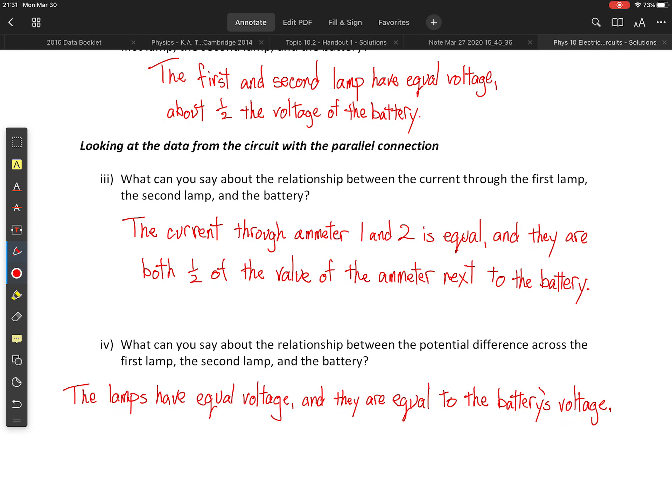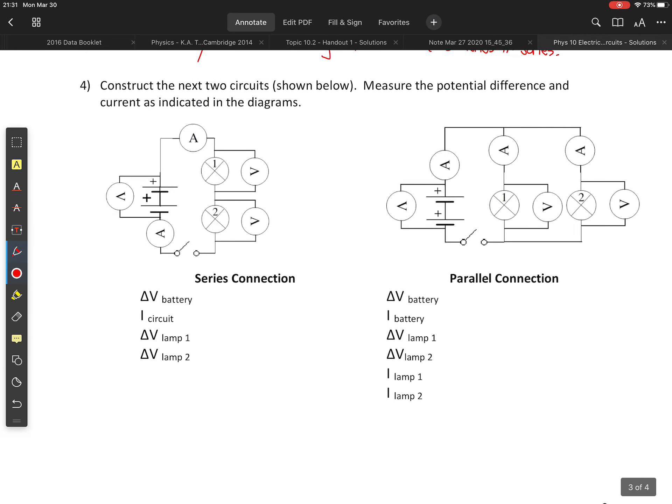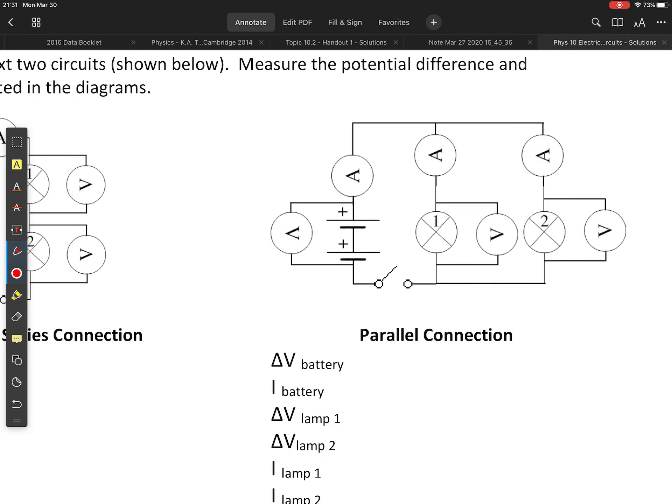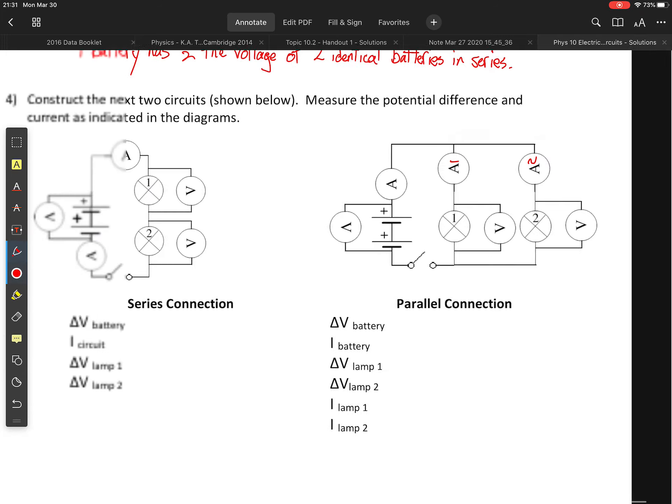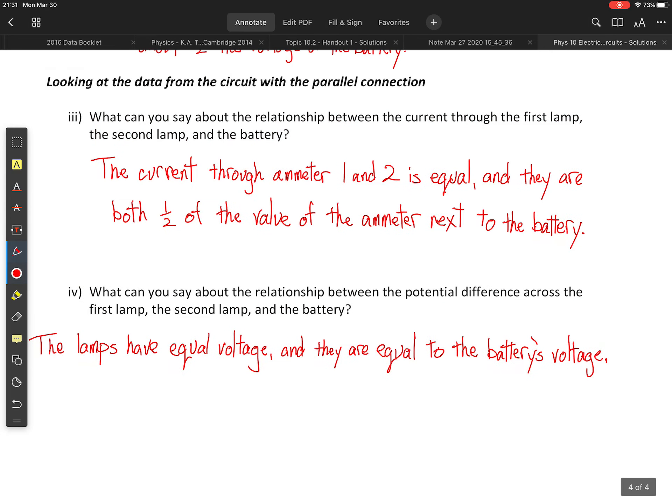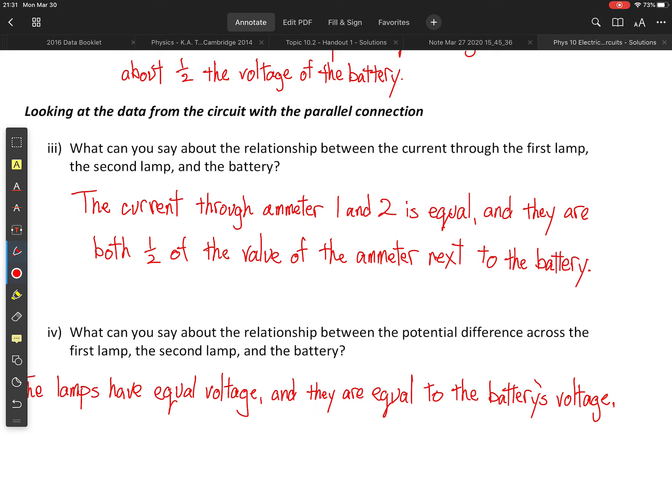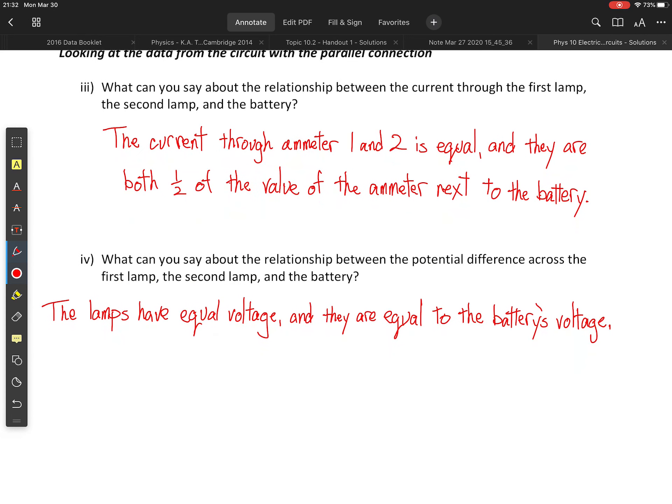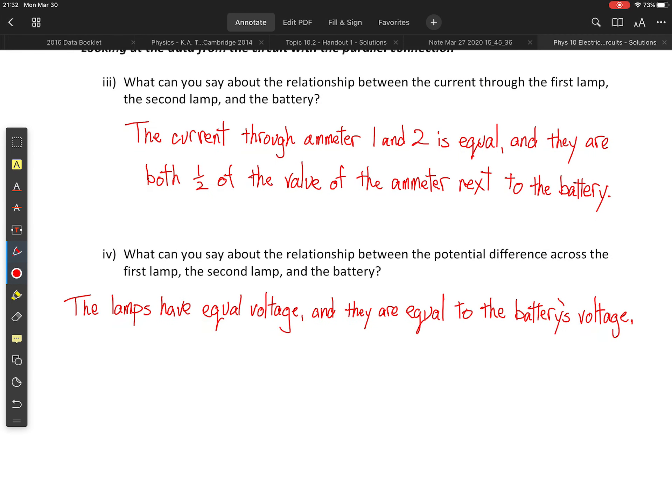What can you say about the relationship between the current through the first lamp, the second lamp, and the battery? Okay, the current through ammeter one and two, and by ammeter one and two, I am just referring to these guys. So we can call this ammeter one and ammeter two. There we go. So the current through ammeter one and ammeter two will be equal, and they will both be one half of the value of the ammeter next to the battery. So the more of these parallel loops we add, the more current we are going to draw from the battery. And that can actually be a little bit dangerous if we have too many parallel components. You can draw too much current from the battery. It'll get hot. You can actually blow up a battery. You can cause it to explode doing such things. Don't blow up batteries. They contain gross chemicals that you would not want on yourself or anyone else.